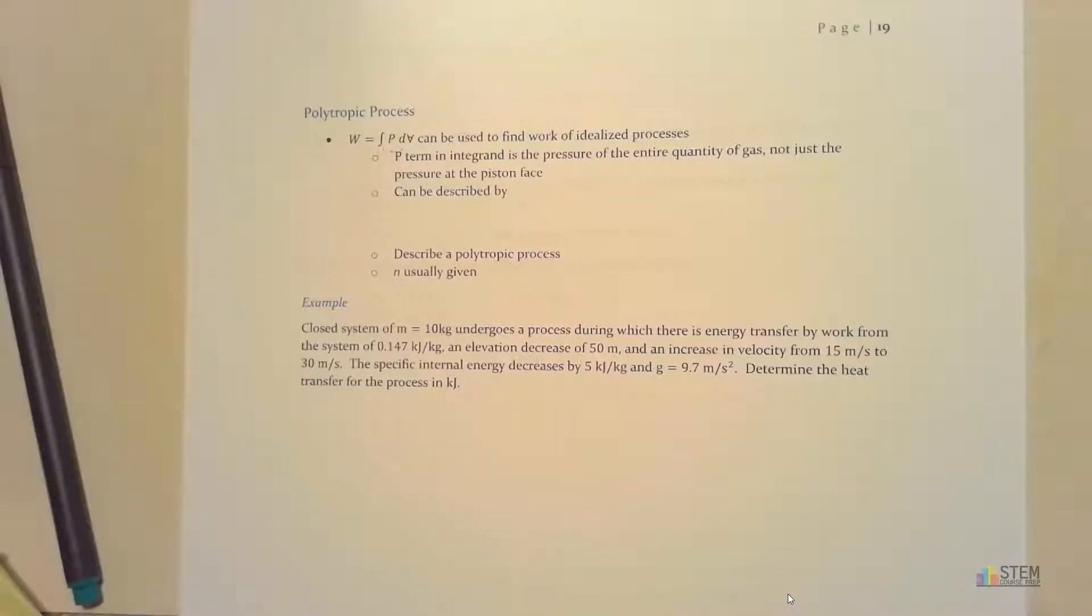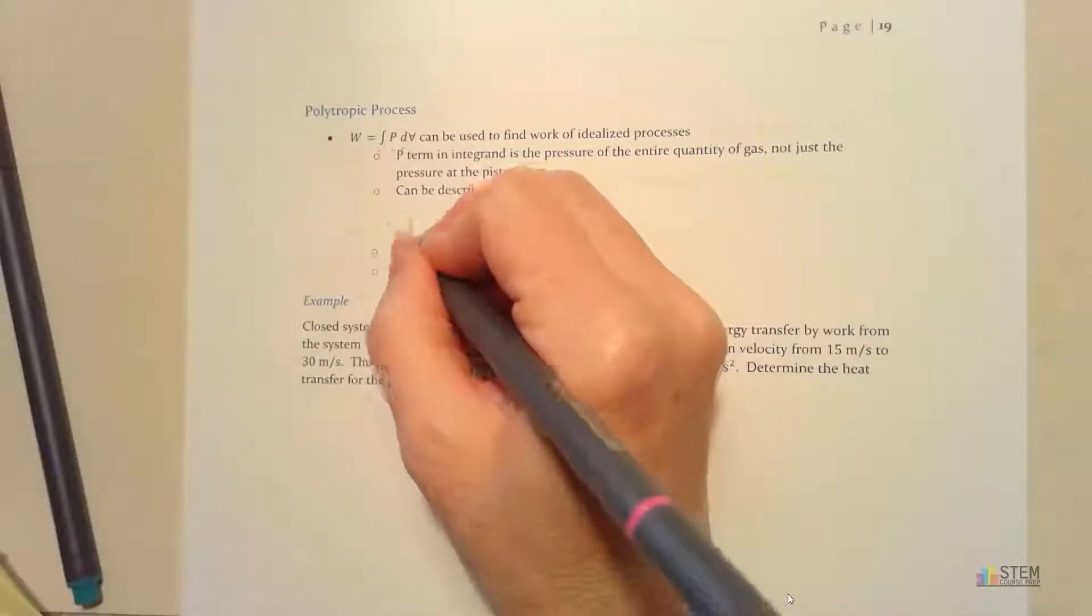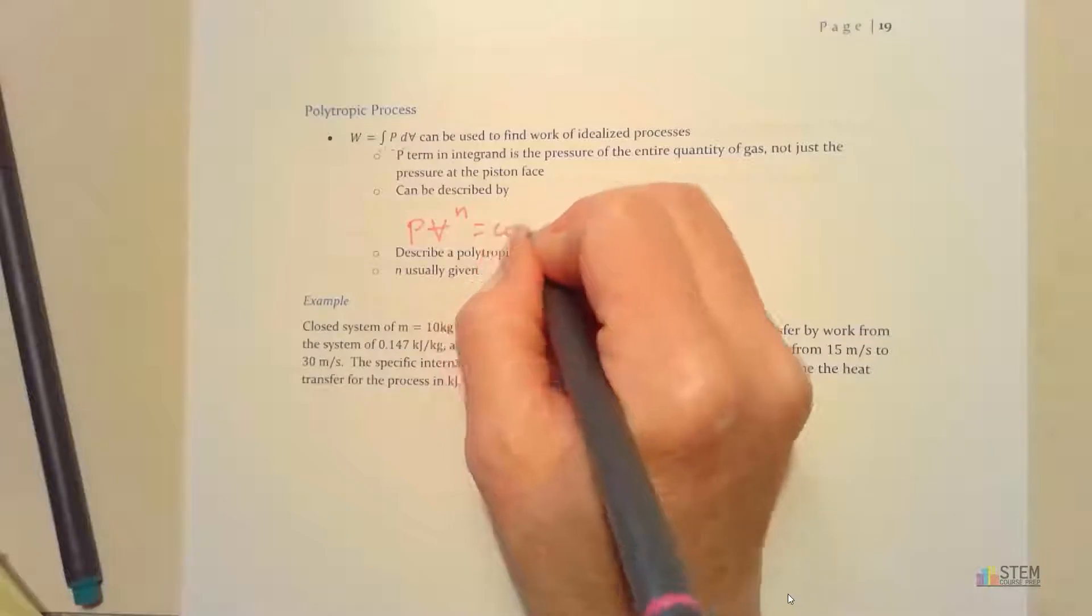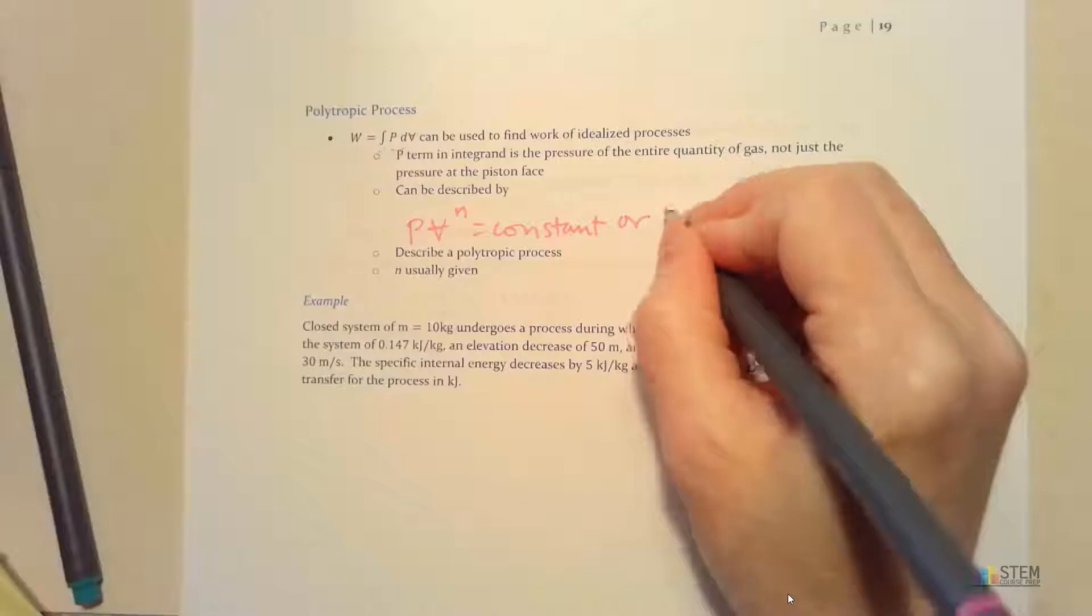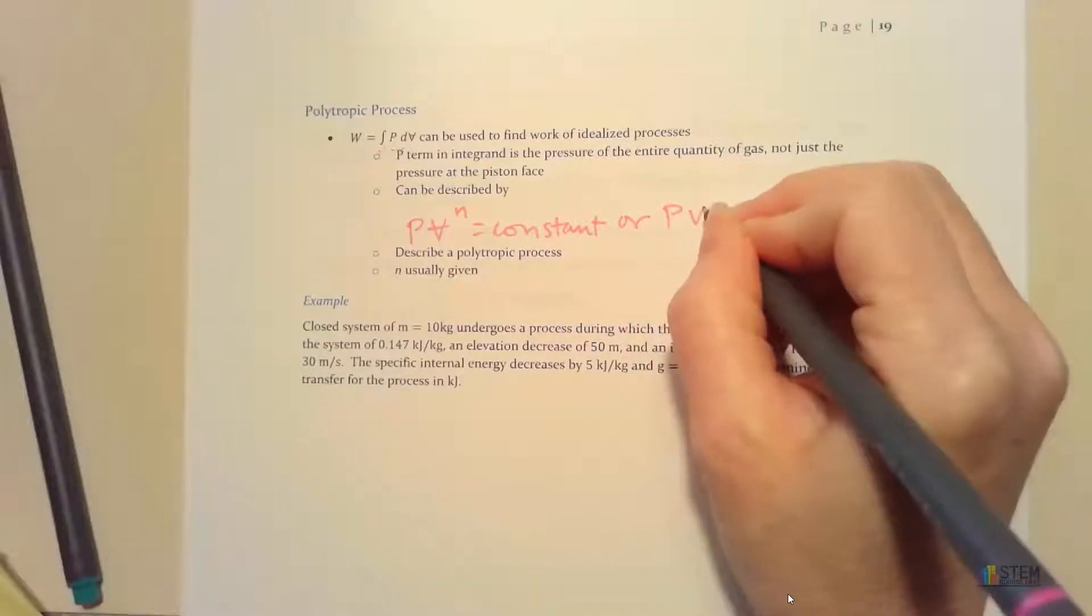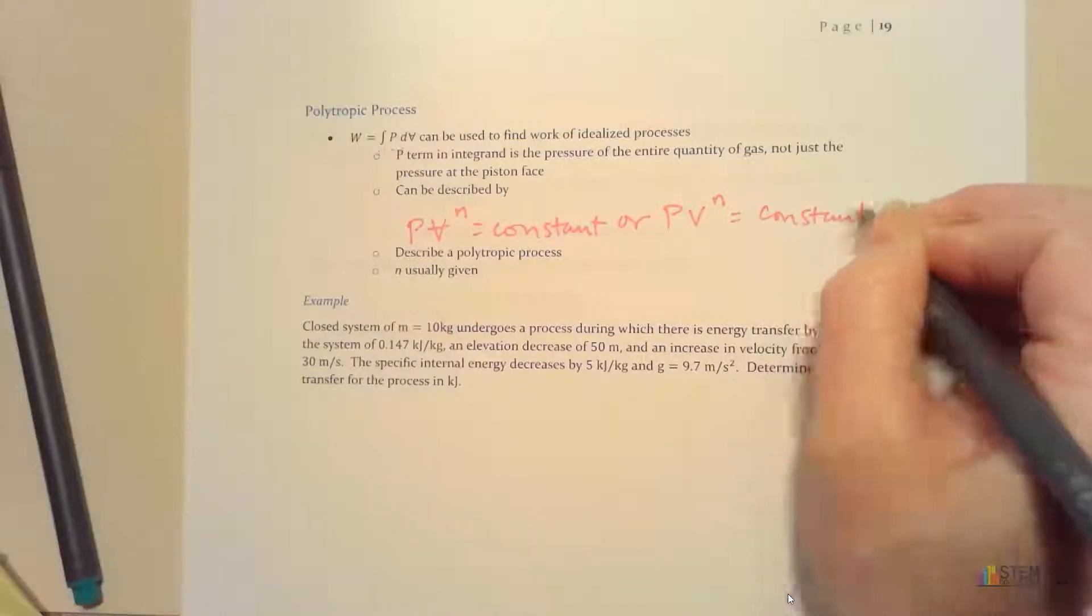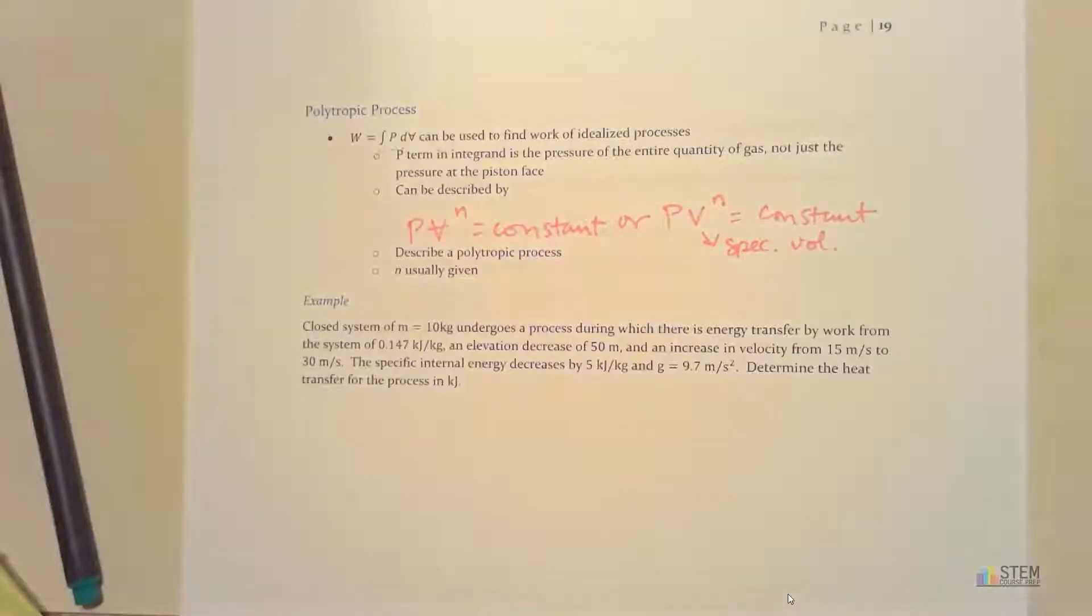This type of process can be described by PV raised to the nth power equals a constant, or we could have pressure times the specific volume to the power of n equals a constant. These two equations are going to describe a polytropic process.